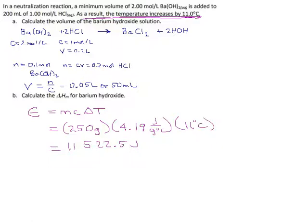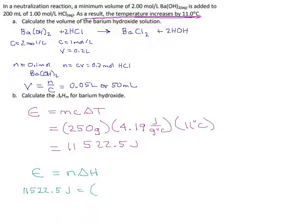That means that must also be the amount of energy that the reaction put out. When these two chemicals reacted, they put out 11,522.5 joules. So now we can go to the reaction side and say the energy from the chemical reaction is equal to N times delta H — number of moles of the reacting chemical times its molar enthalpy. This is what we're trying to find for barium hydroxide. We know the total energy: 11,522.5. The number of moles of barium hydroxide — we found that — it's 0.1 moles. We had 0.1 moles of barium hydroxide. Then we have our delta H, which we can find if we just divide both sides by 0.1.